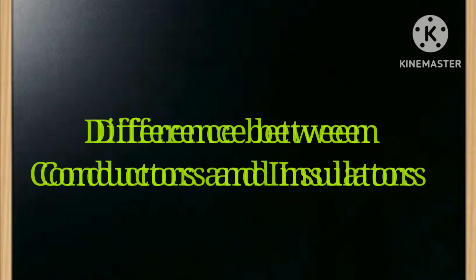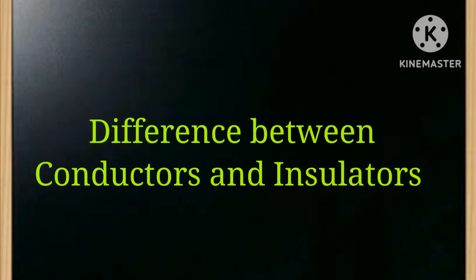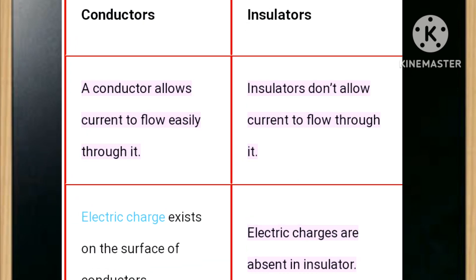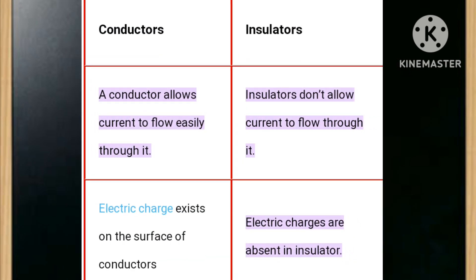Let's discuss the differences between conductors and insulators. A conductor allows current to flow easily through it, while insulators don't allow current to flow through them. Electric charge exists on the surface of a conductor, whereas electric charges are absent in an insulator.